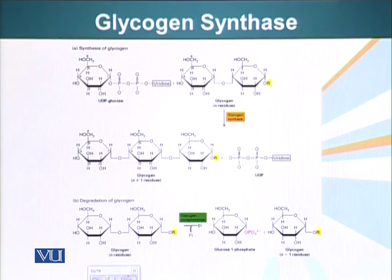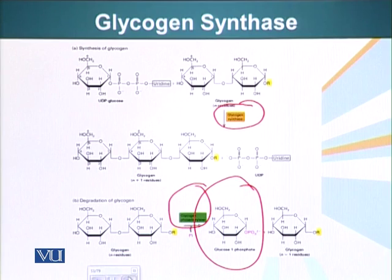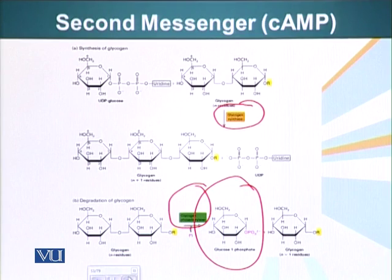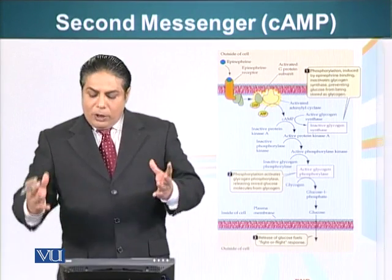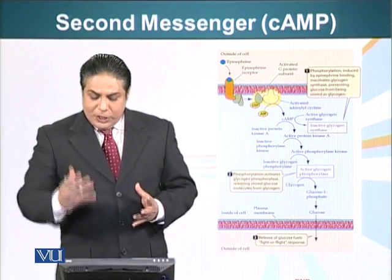Here you can see the structures. We have glycogen — glycogen synthase adds glucose molecules to the glycogen, while glycogen phosphorylase, on the other hand, adds a phosphate group resulting in release of one glucose molecule from the glycogen. This is the overall schematic we just described.